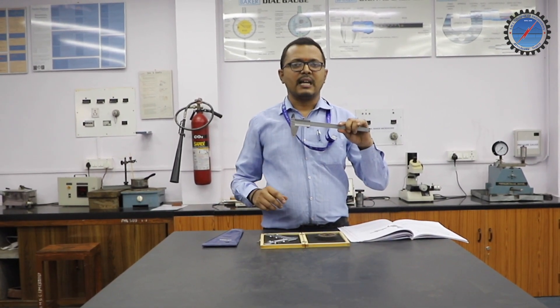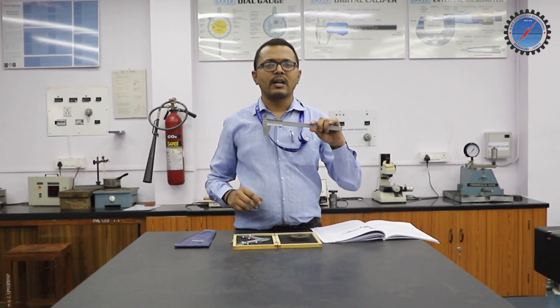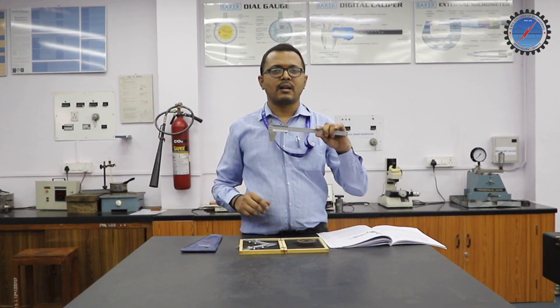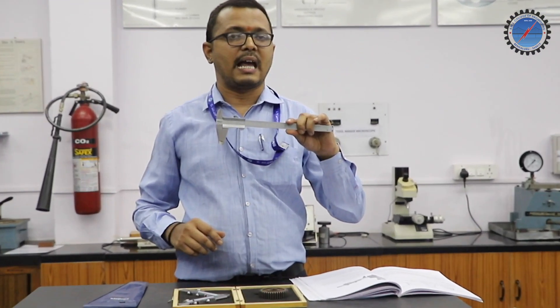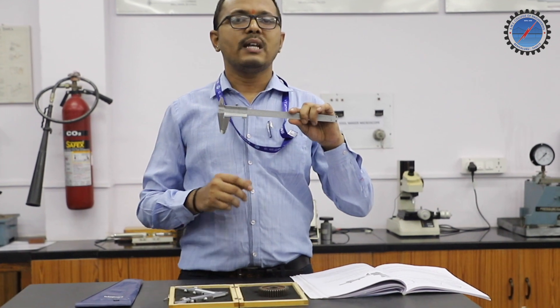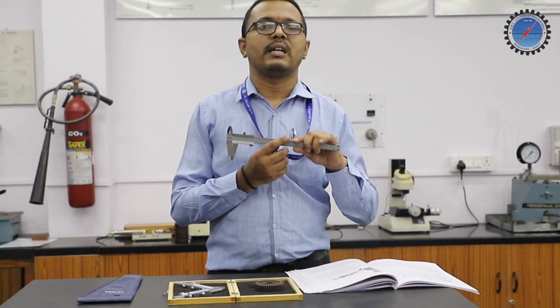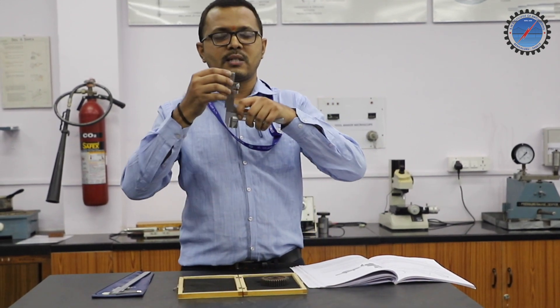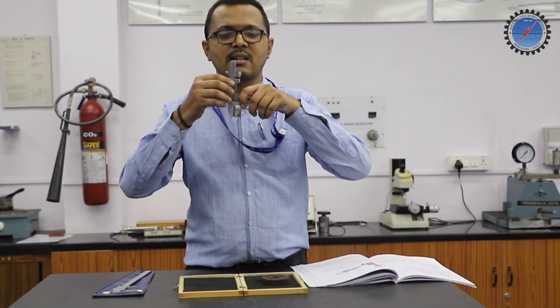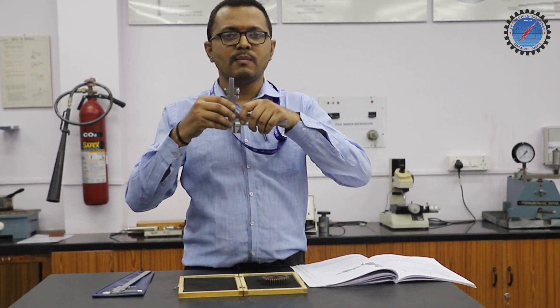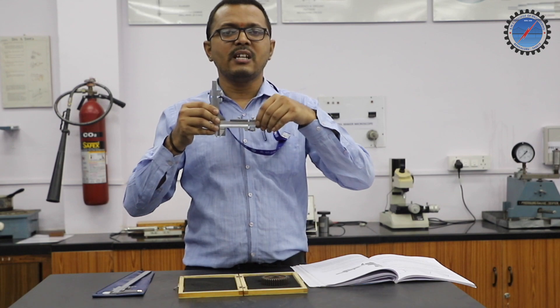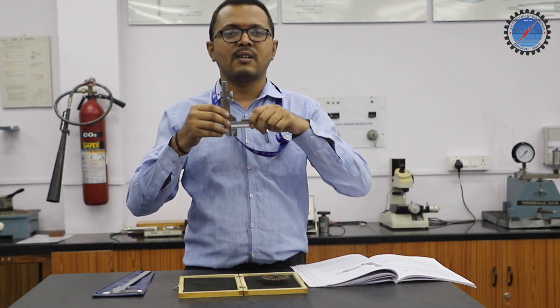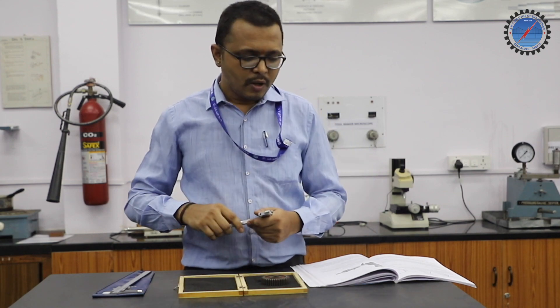Similarly, we have one more vernier caliper called the Gear Tooth Vernier Caliper. In this special caliper, we have one more type of system — this is the Cartesian restrictive system and this is the Cartesian measuring system. We will now discuss what this restriction and measurement mean.